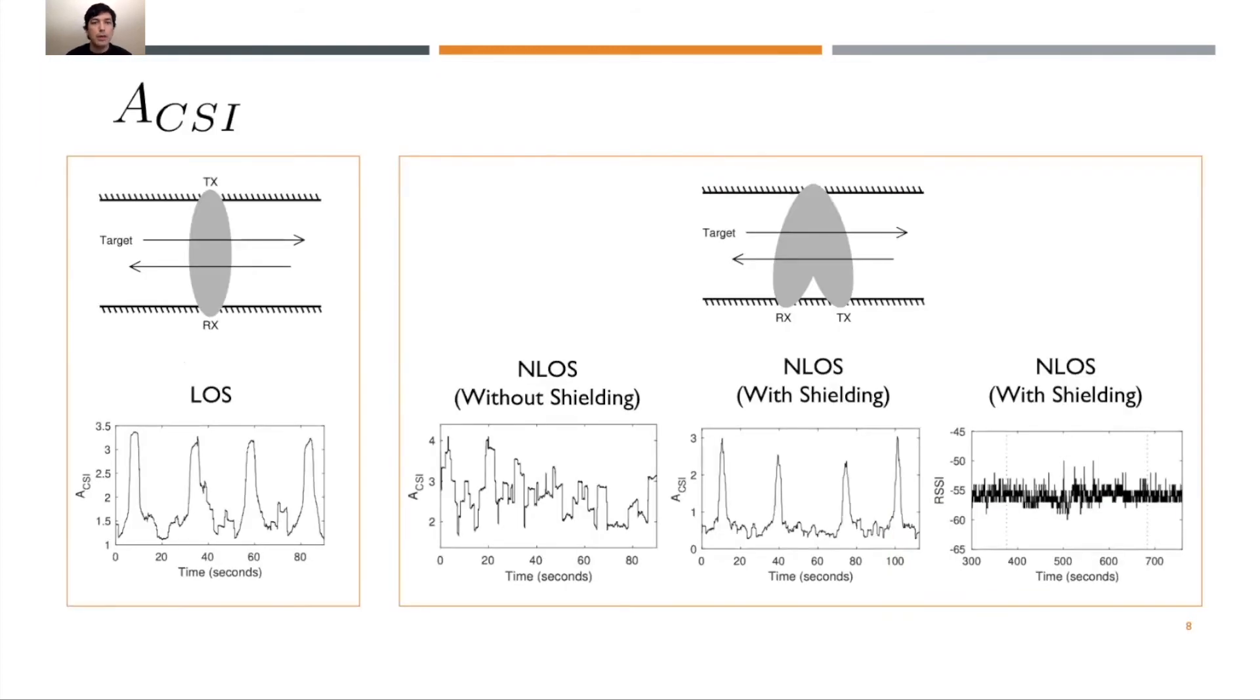Using ACSI, we first look at our line of sight case. We can see that there are four distinct peaks in our ACSI. On the x-axis is time and y-axis is ACSI. These four distinct peaks do match up with when our target walks across the line of sight. So again, ACSI is easy for line of sight. Now we want to look at non-line of sight.